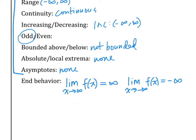From now on, this is how you're going to write end behavior. Last chapter we just wrote a number like three-fourths or one. This time, you're going to write 'limit as x goes to...' equals that number. Same number, but you write the whole limit notation.